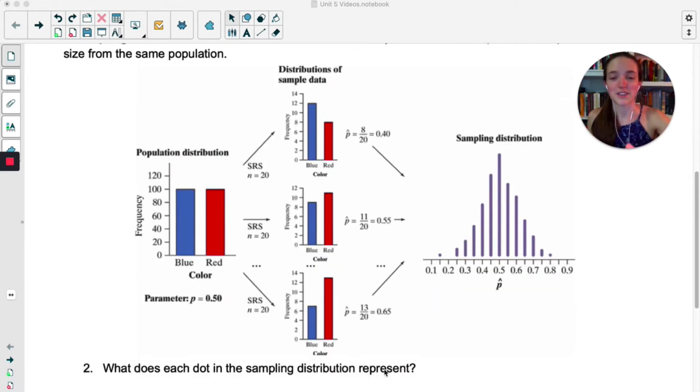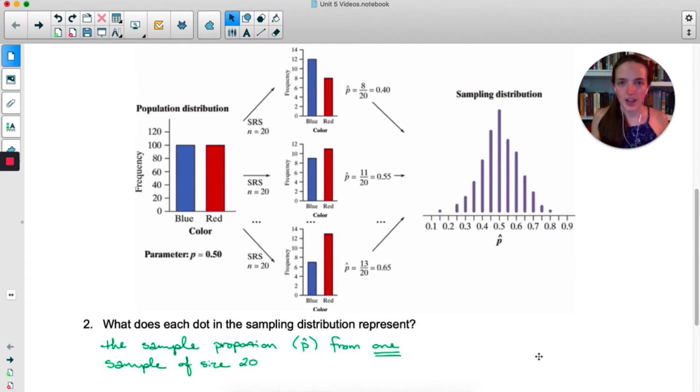Take a moment and answer number two on your own. What would each of those dots represent in the sampling distribution? So each dot in the sampling distribution represents a sample proportion, p hat, from a sample of size 20. And there's a lot of them. Let me say that one more time. Every dot represents a p hat or a sample proportion from a different sample.